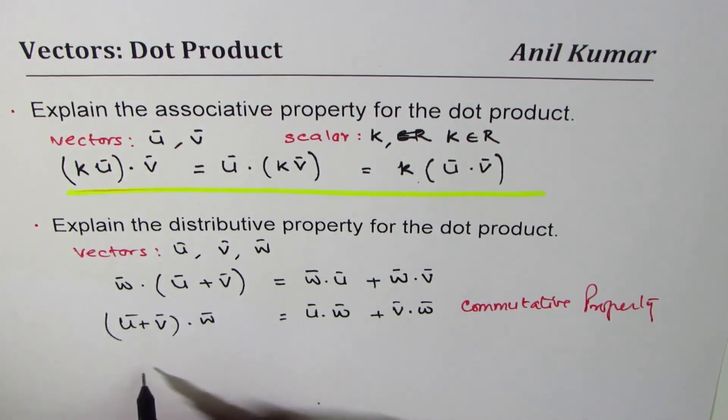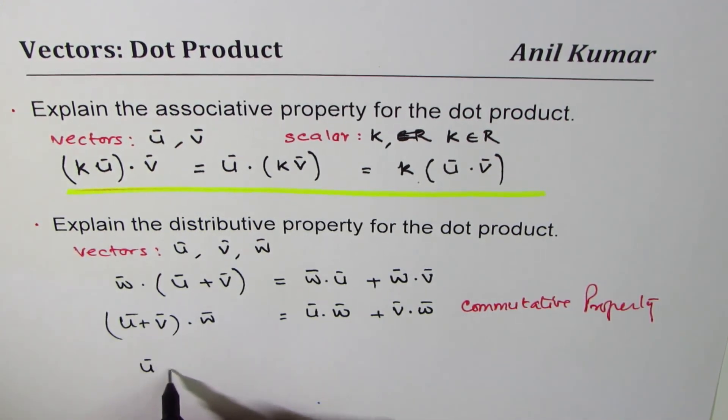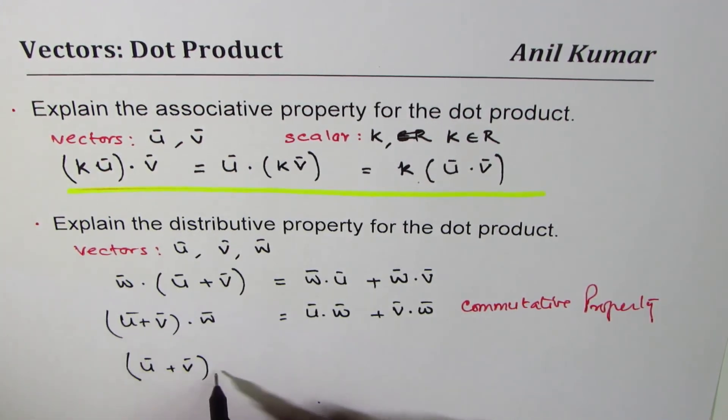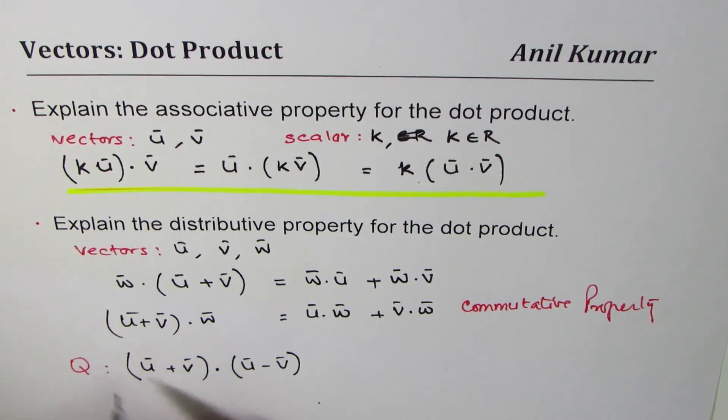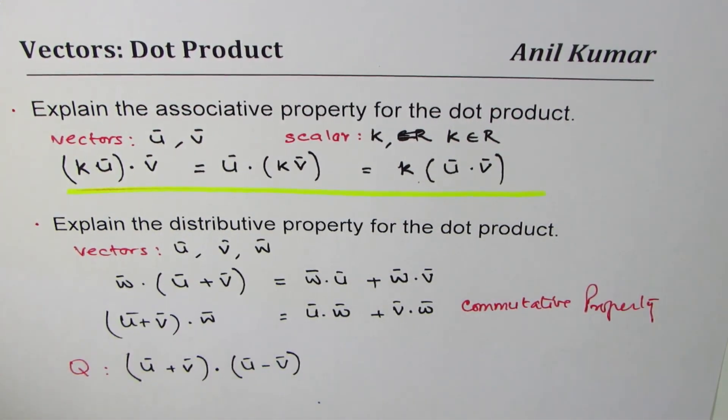We'll use these properties to solve some questions. You could take an example - for example, you could do: what is (u+v)·(u-v)? So let this be your question. Try this question using the properties which we have just learned. I'm Anil Kumar and I hope that helps. Thank you and all the best.